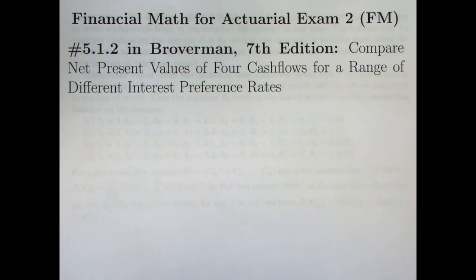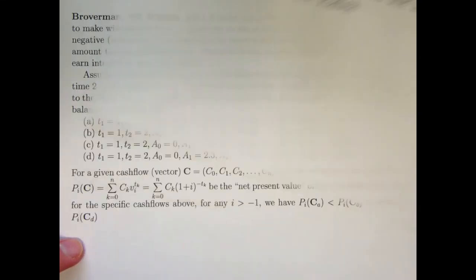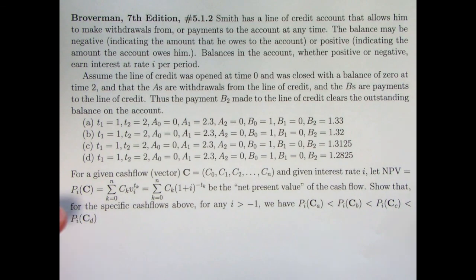In this video, we're going to be comparing net present values for four different cash flows. It's this main cash flow example we've been thinking about, an example from the book, Smith and his line of credit, for a range of different interest preference rates. I did talk about interest preference rates in the last video. In this problem statement, which we'll look at right now, don't be scared off by its length.